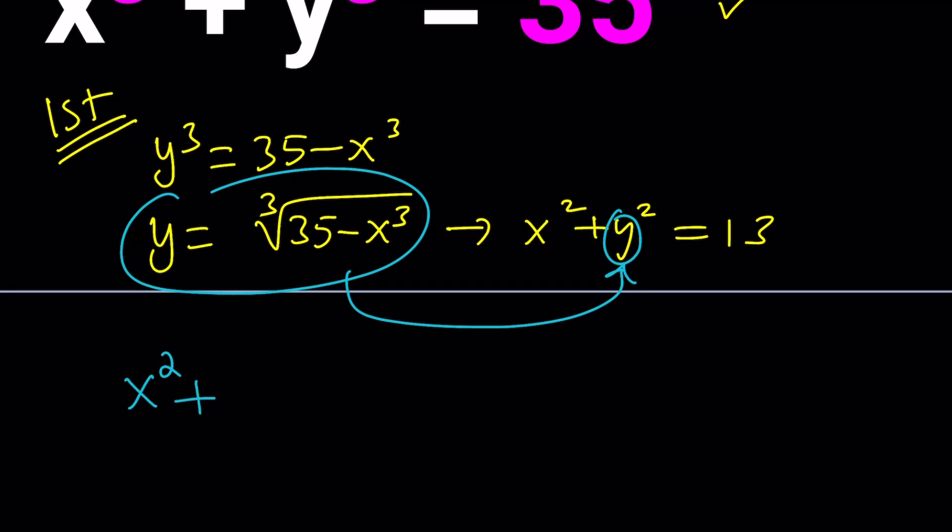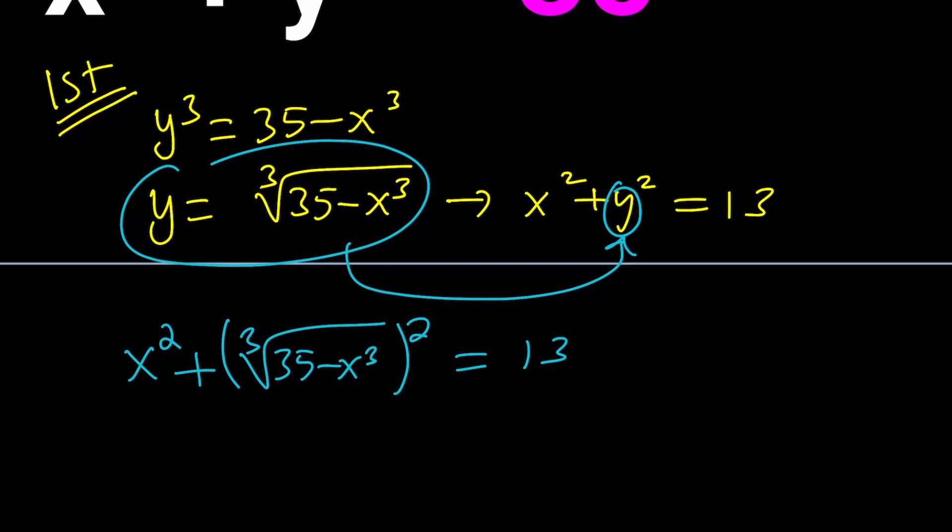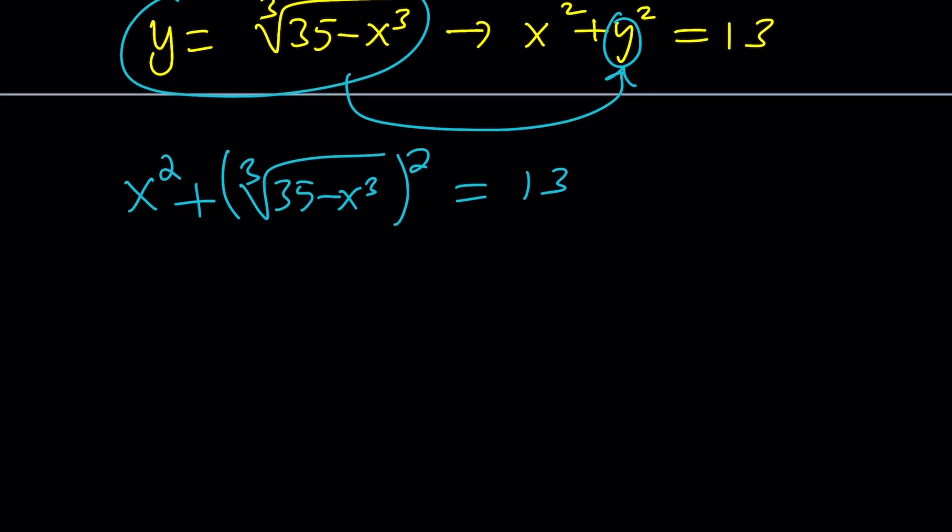Now we can go ahead and plug this into the first equation which is the sum of two squares. So now we can go ahead and replace y with this right here. And that's going to give us something interesting. x squared plus the cube root of 35 minus x cubed squared equals 13. One thing you can do is isolate the cube root of something squared and then cube both sides. But there is a somewhat easier way to get there. Let me show you.